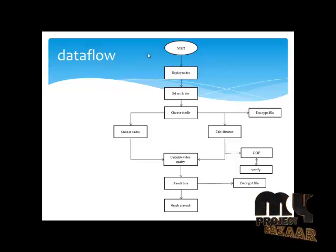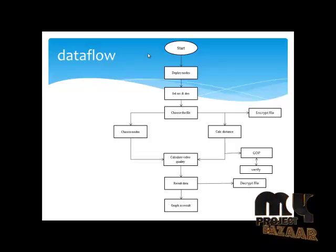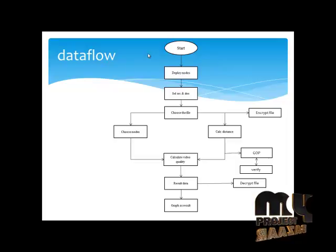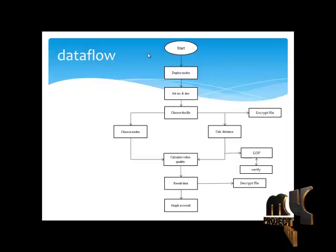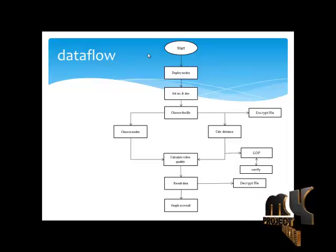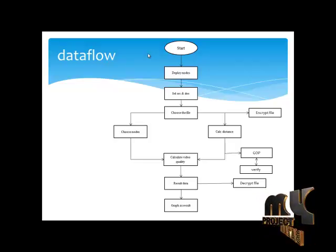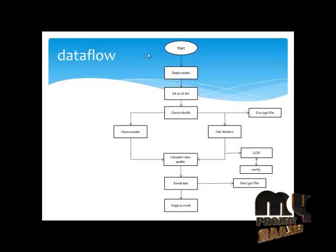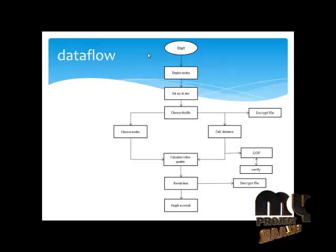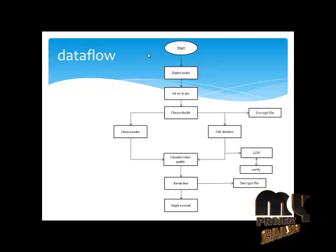Transmissions are carried out using intermediate nodes from source to destination. After that, the file can be chosen. The nodes can be calculated using distance. The file can be encrypted and split into packets for transmission from source to destination to make the data more secure.